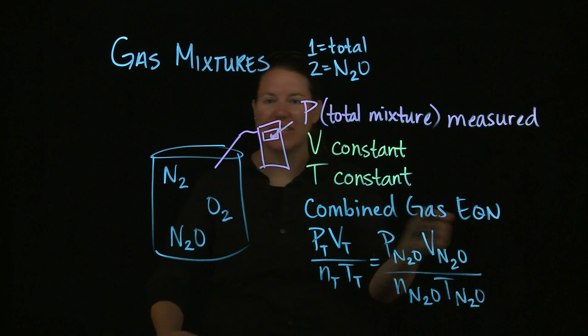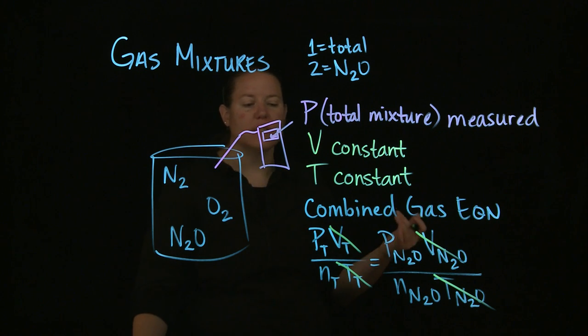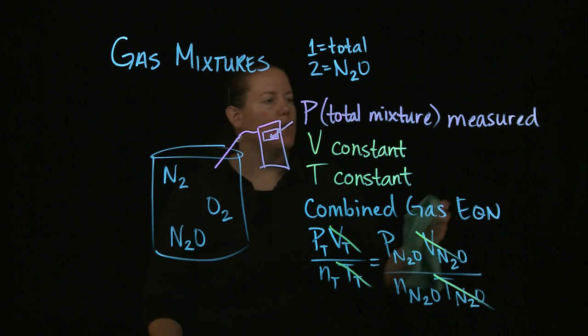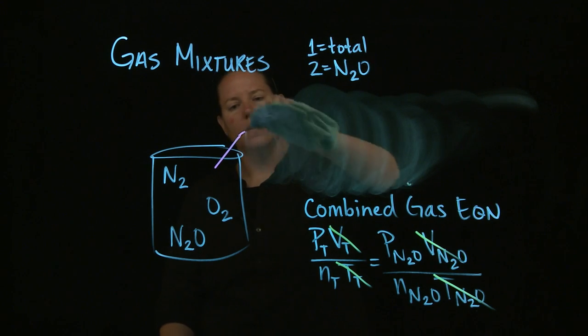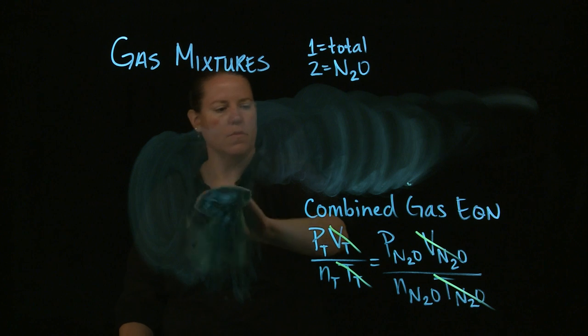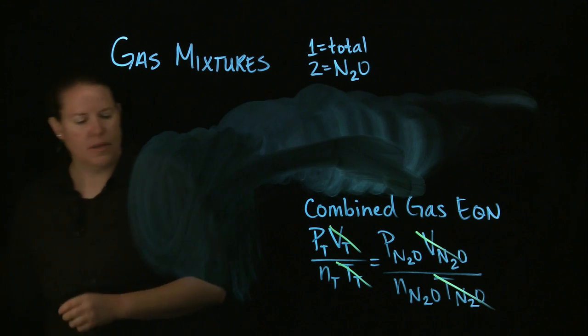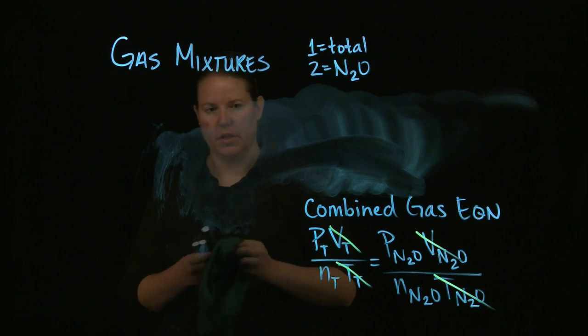If we did that, then our equation would change to P total V total over N total T total equals P of N2O V N2O over N N2O T N2O. We just said V and T are constant for the mixture and for the individual gases. If they're constant, that means they're the same number on both sides, so you can cancel those out.